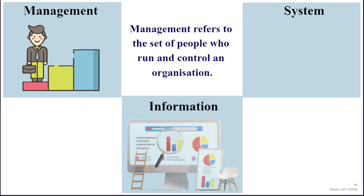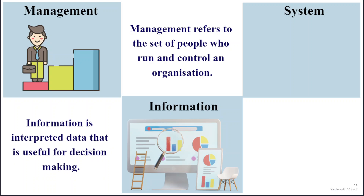Now, what is information? Information is the useful content and knowledge that we derive from raw facts and figures, which is data. Raw facts and figures are data, and information is the useful knowledge that we derive from data after processing and analyzing it. So we can say information is interpreted data, and this information is used for decision making by the person utilizing it.